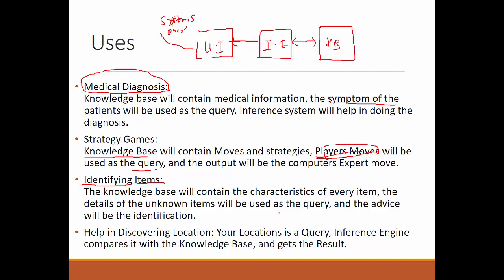Now sometimes we also use it for discovering locations. Here your location will act as a query and inference engine compares it with the knowledge base and gives you the result where you are exactly. So this is how we can use expert systems in various fields.